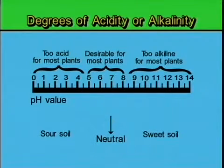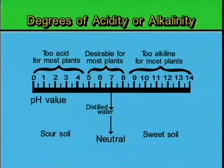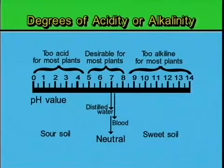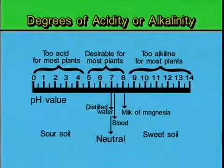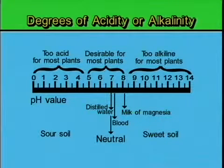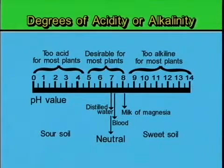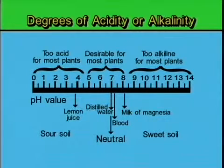To complete the other information on this graphic, it shows that distilled water would have a pH of 7. Blood is about 7.2. Milk of magnesia, which is taken to offset acidity, is above pH 7, or alkaline. Something that we consider quite acidic, like lemon juice, is down there at a pH of about 4.